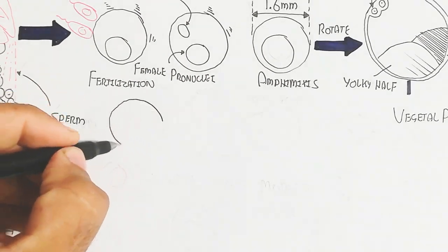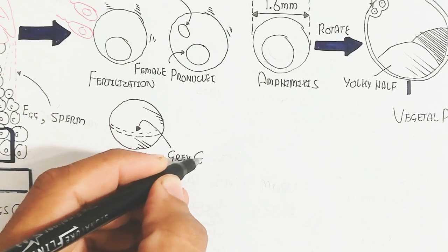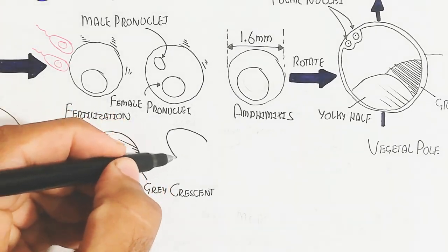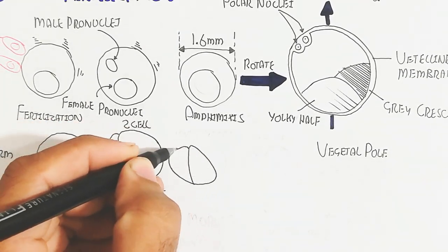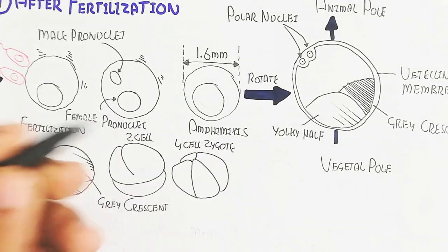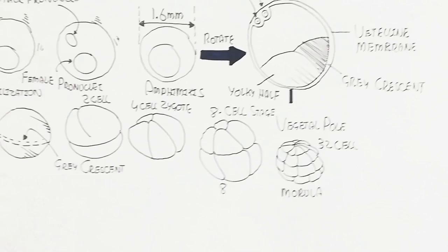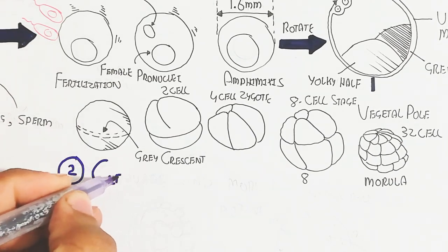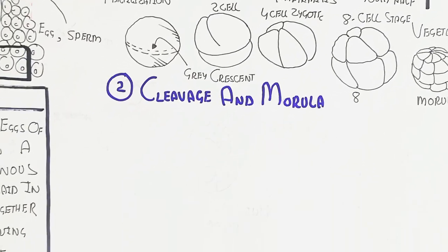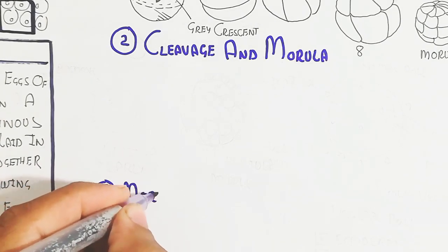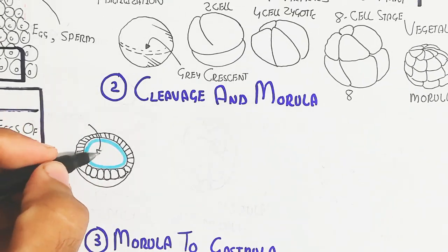After fertilization, the zygote undergoes first cleavage, then second cleavage. The gray crescent is very important for normal development according to Spemann's experiment. Two cells are formed, then four cells at the second cleavage, leading to the third cleavage with an eight-cell stage, and ultimately morula formation at the 32-cell stage. After morula, a cavity known as the blastocoel cavity is formed, filled with fluid.